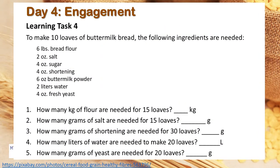Day 4. Engagement. Learning Task Number 4. To make 10 loaves of buttermilk, the following ingredients are needed: 6 pounds bread flour, 2 oz salt, 4 oz sugar, 4 oz shortening, 6 oz buttermilk powder, 2 liters of water, and 4 oz fresh yeast. Questions: No. 1 – How many kilograms of flour are needed for 15 loaves? No. 2 – How many grams of salt are needed for 15 loaves? No. 3 – How many grams of shortening are needed for 30 loaves? No. 4 – How many liters of water are needed for 20 loaves? No. 5 – How many grams of yeast are needed for 20 loaves?